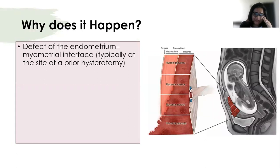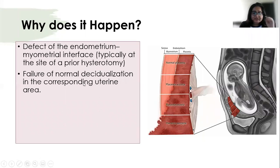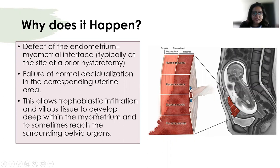Why does this happen? There is a defect between the myometrium and the endometrium. Normally, there is a thin fibrinoid layer called the Nitabuch's layer present between the placenta and the underlying decidua basalis. This Nitabuch's layer is lost in placenta accreta syndromes. In placenta accreta, there is slight infiltration into the myometrium; in increta, it invades deeply into the myometrium; and in percreta, it has perforated beyond the serosa into adjacent pelvic structures.